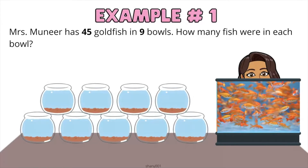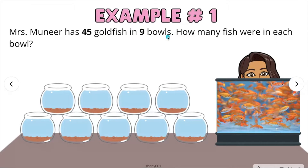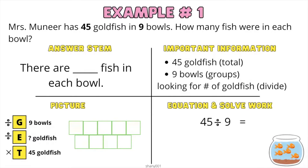So in this case, you have the total number of fish. Our groups is the 9 bowls, and we are looking for each — the number of fish in each bowl. Let's go ahead and make our problem-solving model. For the answer stem, you will write: there are blank fish in each bowl.